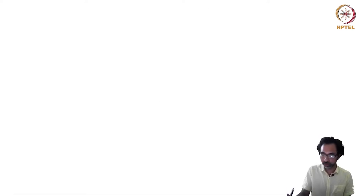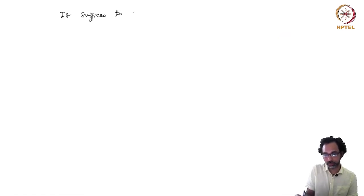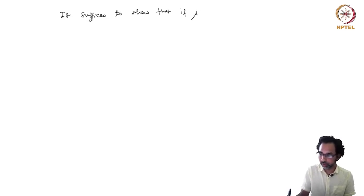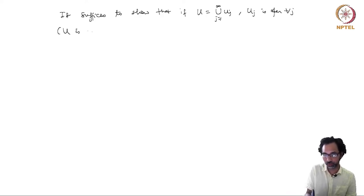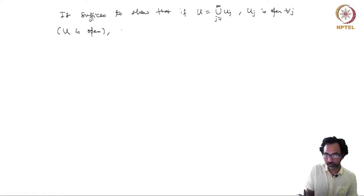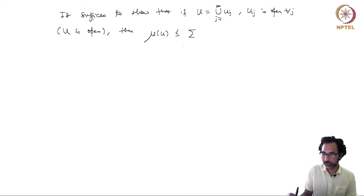To show this, note that it suffices to show that if U is open and U = ∪U_j where each U_j is open, then μ(U) ≤ Σ_{j=1}^{∞} μ(U_j). This will give us the countable sub-additivity property needed.